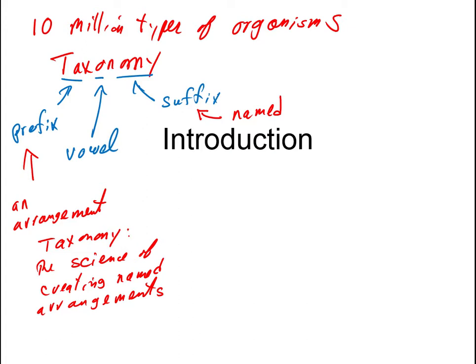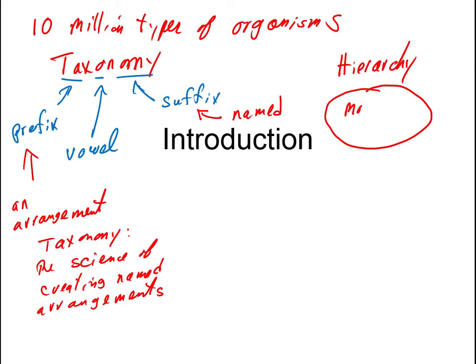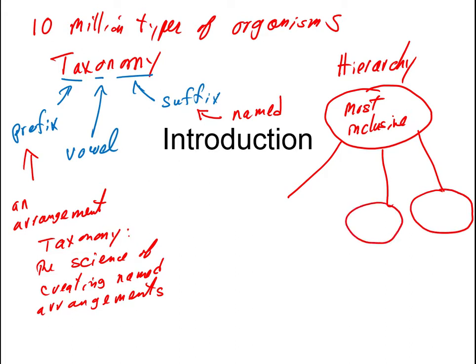When we look at a taxonomy, we notice some unusual things about it. Perhaps the most unusual thing is that it is hierarchically arranged — the names are in a hierarchy. We find different levels in this hierarchy: there's a top level, which is the most inclusive, and underneath that there are a number of other levels.